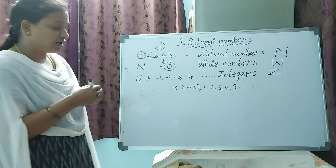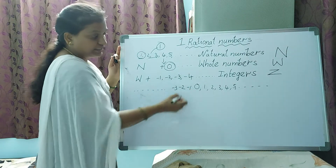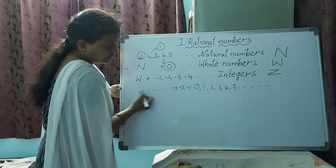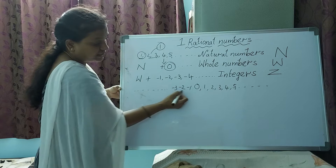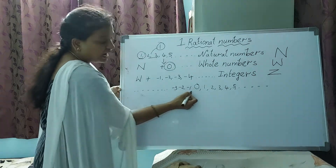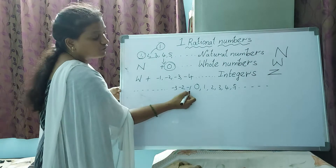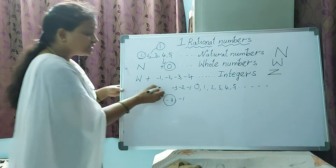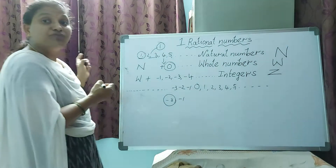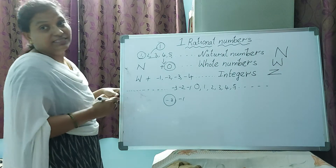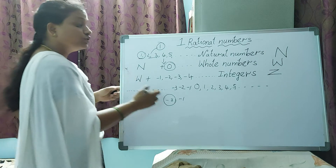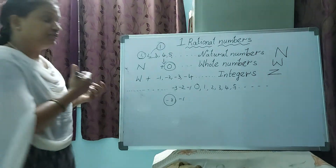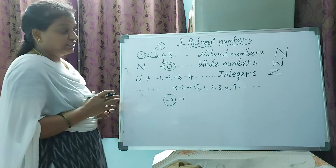In integers, which is the smallest? Among negative numbers: minus 2 is less than minus 1, minus 3 is less than minus 2, so the more negative you go, the smaller it gets. We can't define the smallest integer, and we also can't define the largest integer, because both extend to infinity.